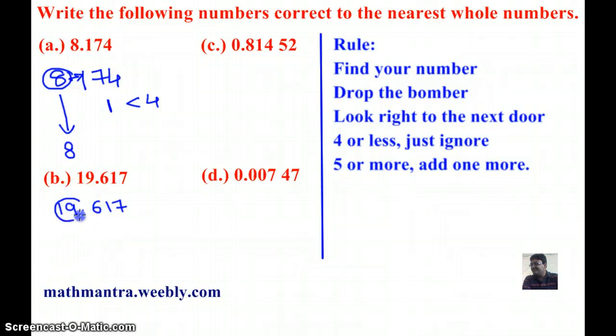So my number is 19 and next door number is 6, which is greater than 5, and according